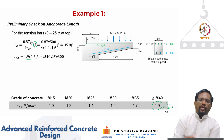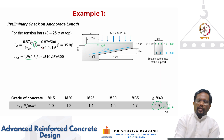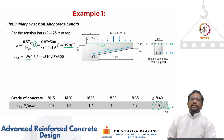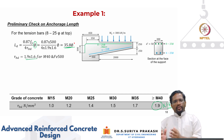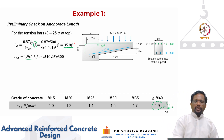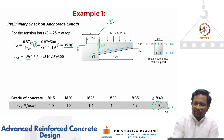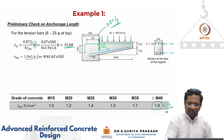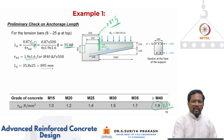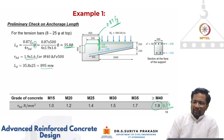With fy = 500 (Fe 500 steel), substituting 0.87 × 500 divided by 4 × tau_bd gives a required development length of 35.8 times the diameter. For a 25 mm bar, Ld works out to 895 mm. This is the length needed to develop the maximum stress of 0.87 fy at the section.